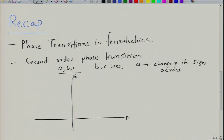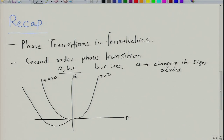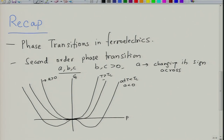When we plot free energy as a function of polarization, A is positive when the temperature is above a transition temperature Tc. So A is greater than 0 at T greater than Tc, and it turns out A is equal to 0 at T equal to Tc.